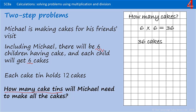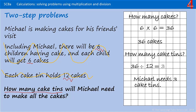We haven't finished answering the question though, because the question wants to know how many cake tins he will need. We can cross that first bit out because we've dealt with it. How many cake tins will he need? Each cake tin holds 12 cakes. He's making 36 cakes and each cake tin will hold 12, so we're going to divide 36 by 12. If you're familiar with your 12 times table and your 3 times table, you'll know that that is 3. Have we answered the question — how many cake tins will Michael need to make all the cakes? The answer is that Michael needs 3 cake tins.